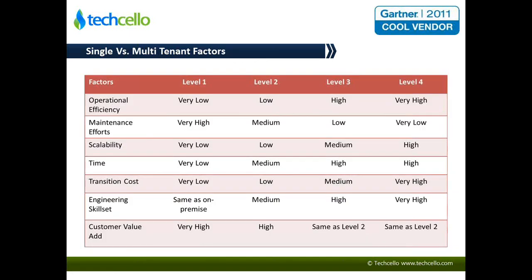Looking at the factors across these four levels: operational efficiency is extremely low in Level 1 — you just cannot maintain so many versions. Level 4 has very high efficiency because upgrades or enhancements are done in one place or a handful of places. Maintenance effort is extremely high in Level 1 because you have to keep doing it again and again, while Level 4 is really low in terms of maintenance.